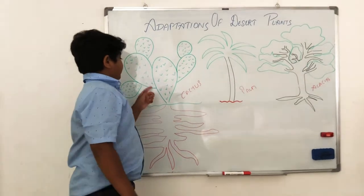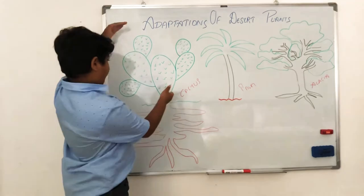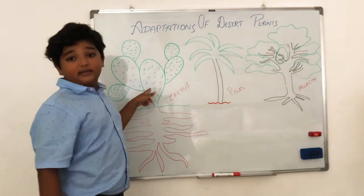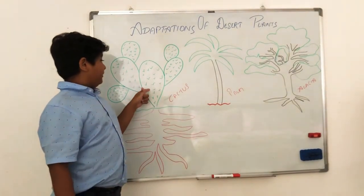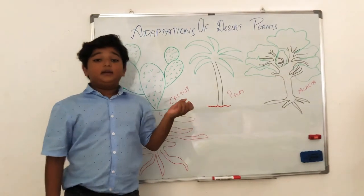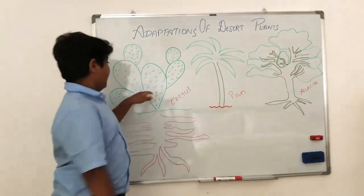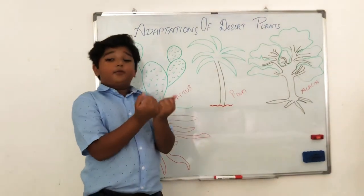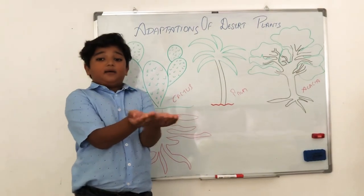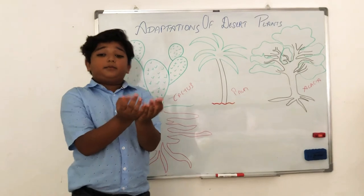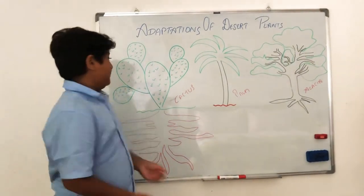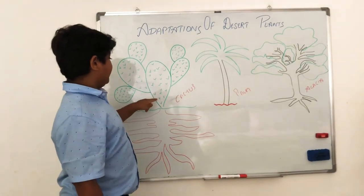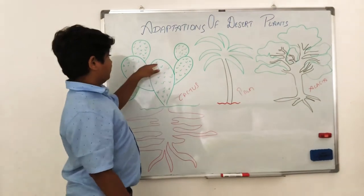Since we are done with the top part of a cactus, one more thing — unlike normal plants that make food in their leaves through photosynthesis via the stomata, a cactus makes food in its stem through photosynthesis in its stomata. The stem is green because it contains chlorophyll.